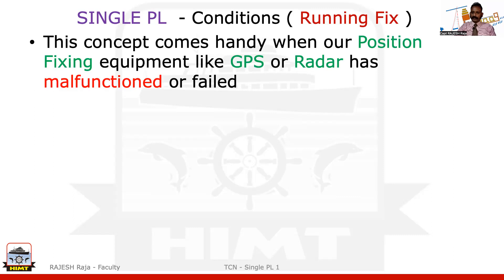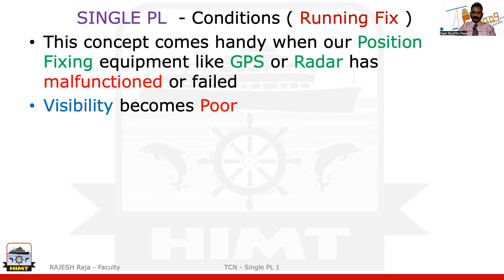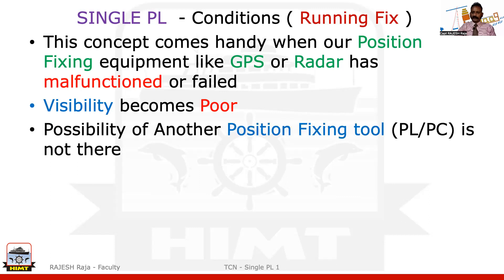This concept used to come handy when position fixing tools like SatNav, and earlier lattice versions before GPS, were not continuous and could have errors. So let us say we have an issue with the position fixing tool — that can happen even now. Radar can malfunction, visibility can become poor. You might have found one position fixing tool which is a PL, but after that you were unable to get one more fixing tool to complete a normal running fix.